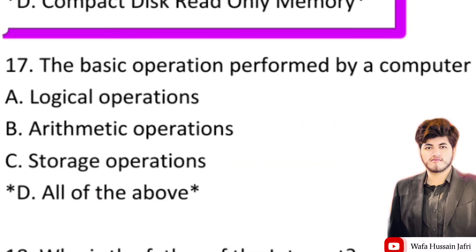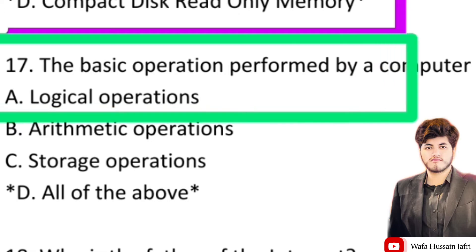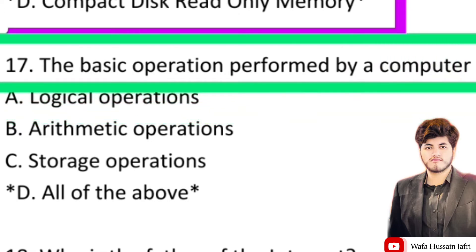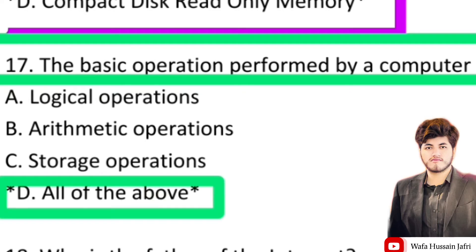Our next question is: the basic operations performed by a computer are — the right answer covers all of them: logical operations, arithmetic operations, and storage operations. These are all its basic functions.